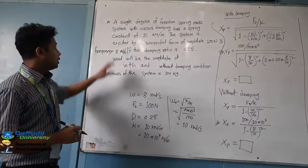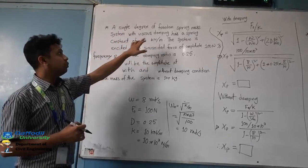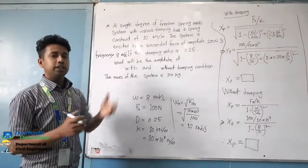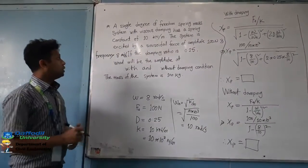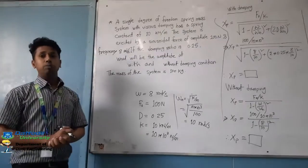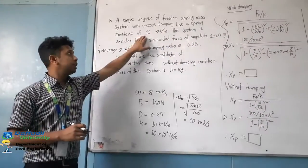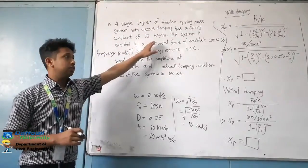Now we can see that this problem is given. A single degree of freedom spring system with viscous damping has a spring constant of 10 kN per meter. The spring constant is 10 kN per meter.